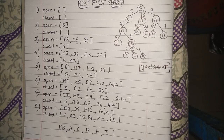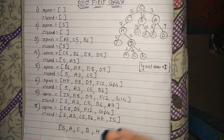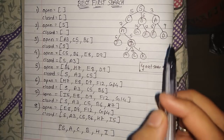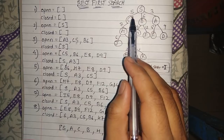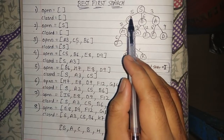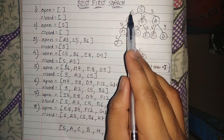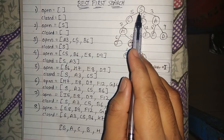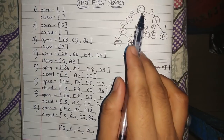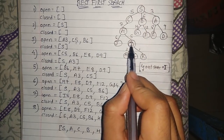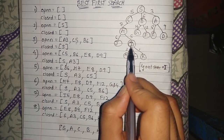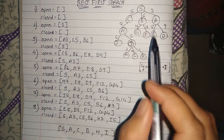Hello everyone, today let's see an example of the Best-First Search algorithm in artificial intelligence. In Best-First Search, heuristic values are associated with each and every node, and with the help of the heuristic value, we will traverse or find a path to reach the goal node.